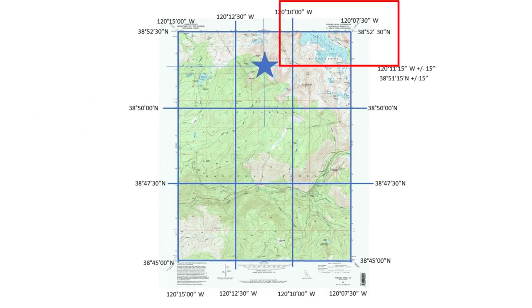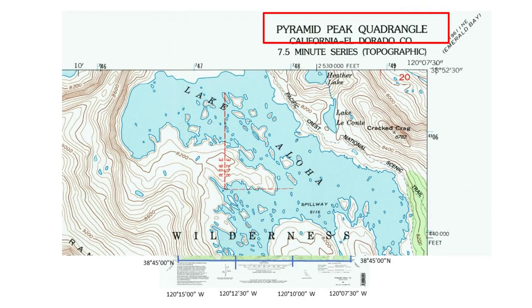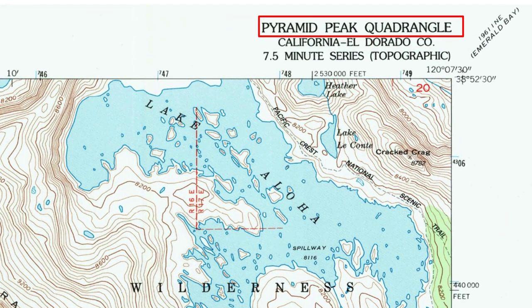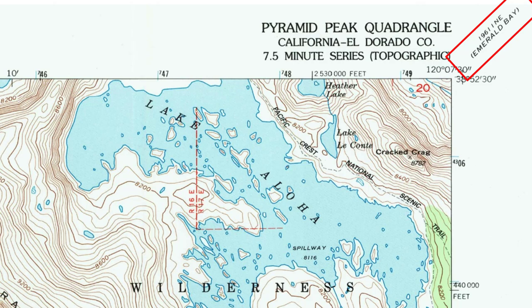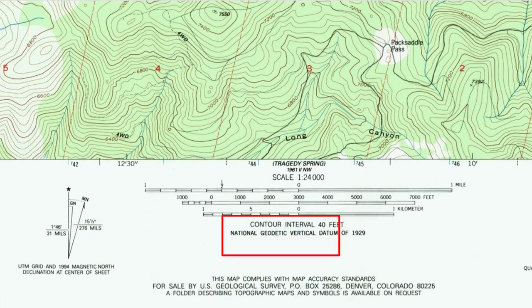Now let's study the rest of the map. Here in the top right corner, we find the name of the map, and it's identified as part of a 7-and-a-half-minute series — confirmed by our measurements. We also see another name in parentheses at an angle, which is the name of the adjacent 7-and-a-half-minute quadrangle that meets this one at that corner. All edges and corners of this map have names of the adjoining maps. For example, the quadrangle adjoining this map to the south is called Tragedy Springs.